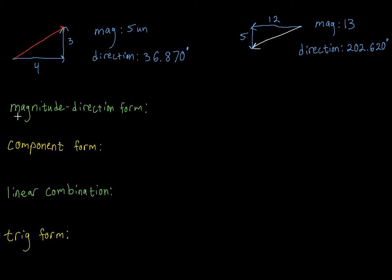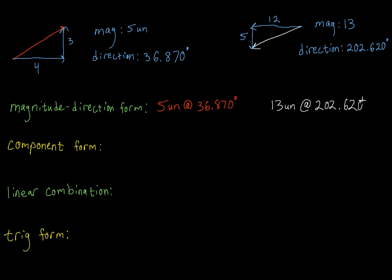One method that we use to describe a vector is the magnitude-direction form — very aptly named, because we're going to write down the magnitude of the vector, five units, and then we're going to say that it's at a certain direction, which is 36.870 degrees. What I like to do is use the at symbol, so I can say five units at 36.870 degrees. We can describe the white vector the same way: 13 units at 202.620 degrees. Magnitude-direction form — you write down the magnitude, then you write down the direction.